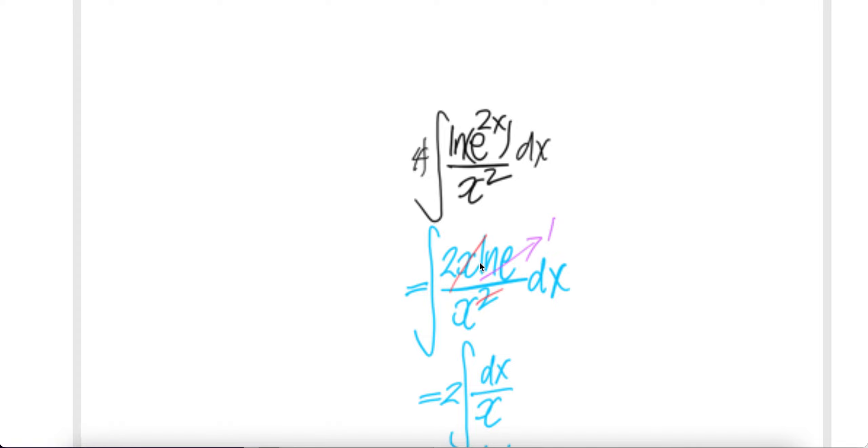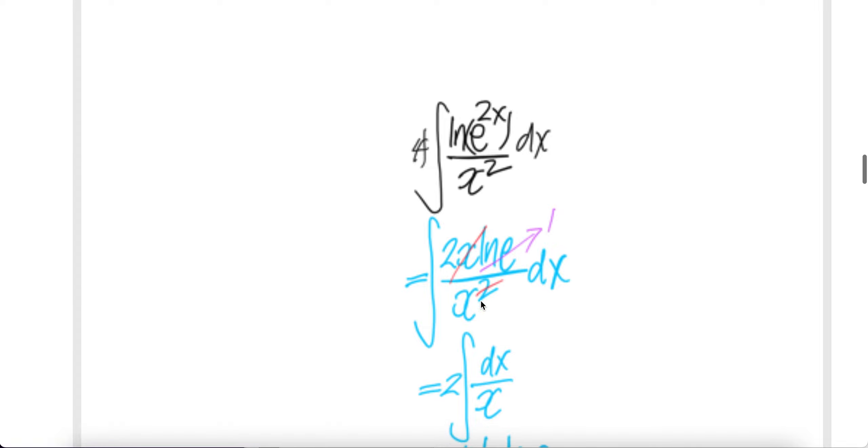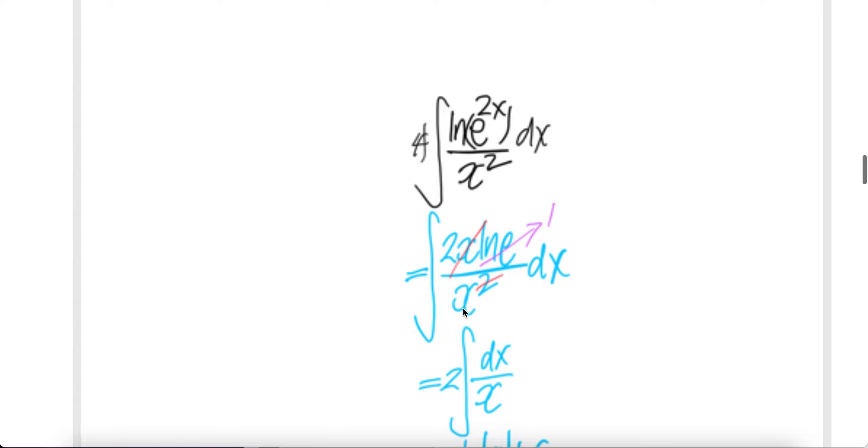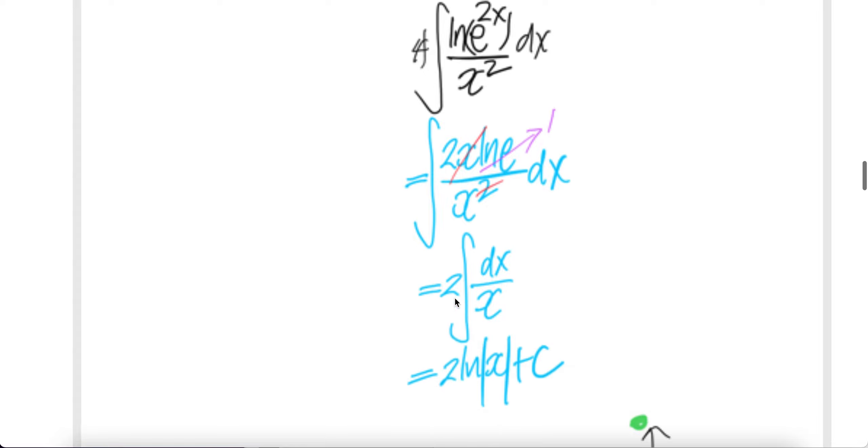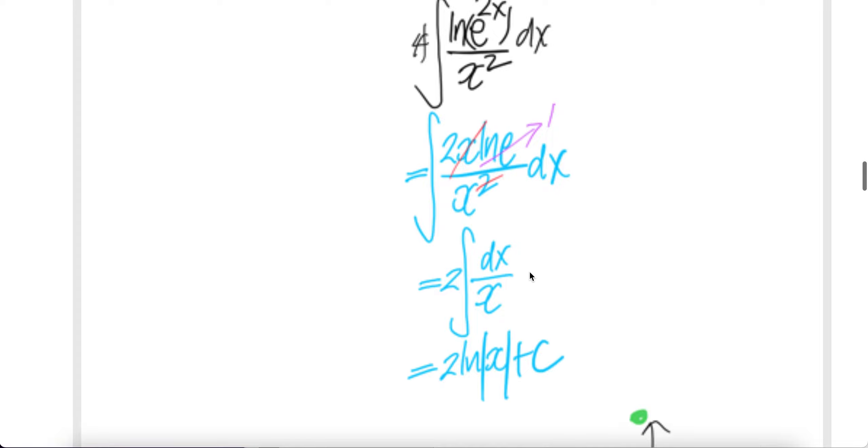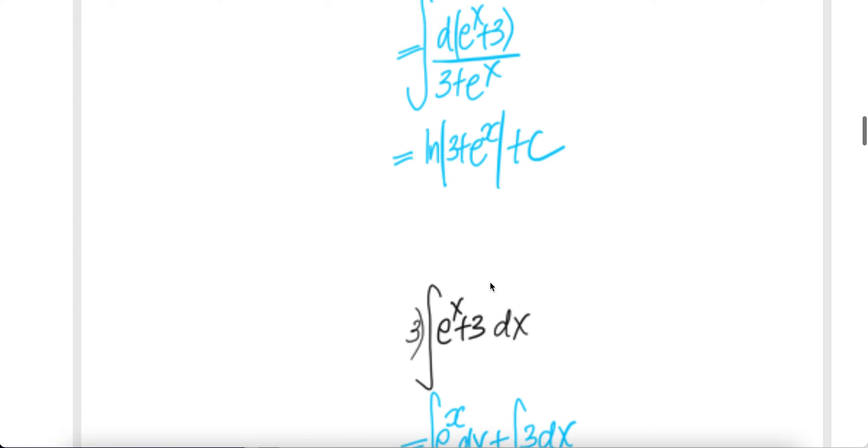ln e is 1, so it will be 2x times 1 over x squared. x and x cancel, you get integral 2 over x. 2 out of the integral. Integral of 1 over x dx. This is ln absolute value of x plus C.